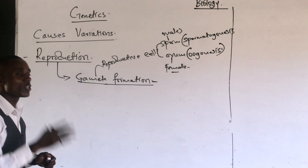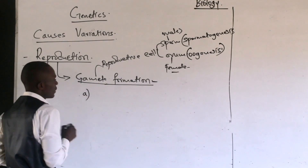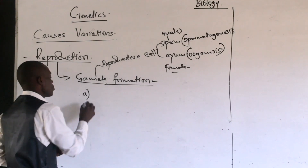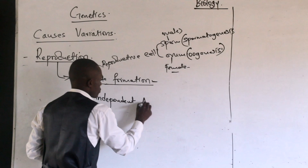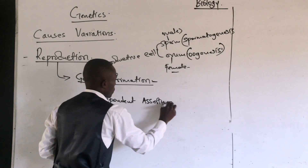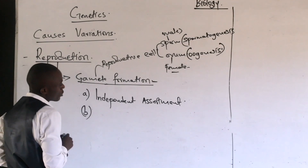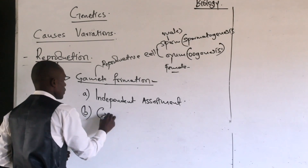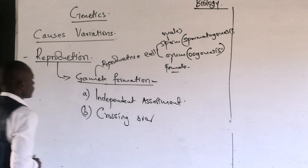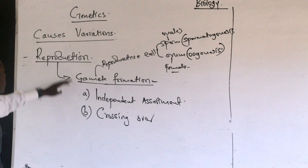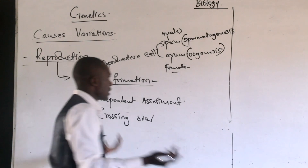So how does gamete formation bring about variation? In gamete formation, there are two important processes. Process number one is independent assortment, and number two is crossing over. These are the two key points which bring about variation.